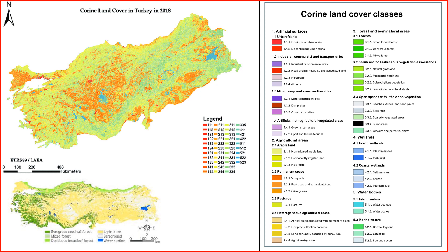1. Urban areas. Turkey has numerous cities and urban centers with varying degrees of development. Major cities like Istanbul, Ankara, and Izmir are characterized by a mix of residential, commercial, and industrial land uses. Urban expansion and infrastructure development are prominent features in these areas.